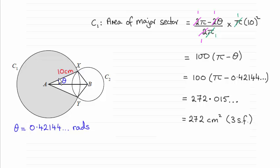So it would be 2 pi radians for a complete turn minus 2 theta here. So you can see I've got 2 pi minus 2 theta, and then I've compared it with all of a complete turn of 2 pi radians.